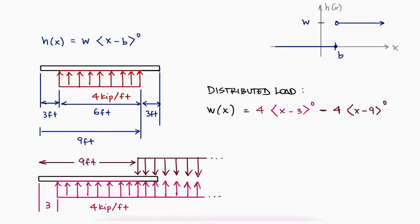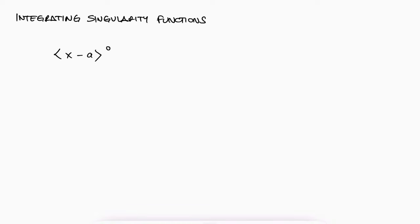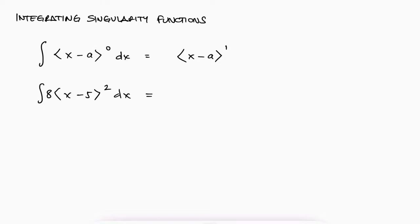The last thing to know is that singularity functions are integrated normally after the zero exponent. For brackets to the zero, their integral will be the same brackets with a 1 as the exponent. After that, just integrate normally as if the brackets were the variable x. For example, the integral of 8 times x minus 5 squared would be 8 over 3 times x minus 5 cubed, keeping the triangular brackets of course.